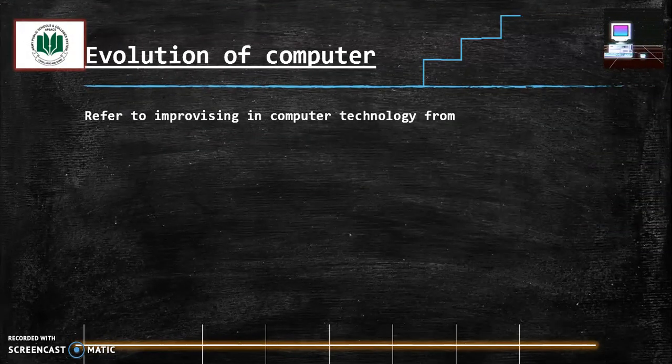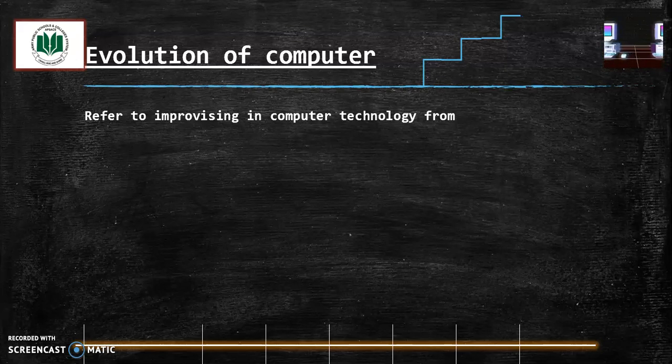Evolution of computer. Evolution means continuous improvising in any field. How computer technology improved itself from dark age to middle dark age and then our latest modern age of computers.